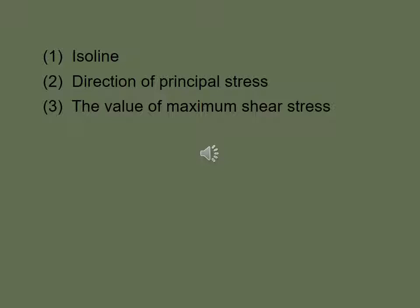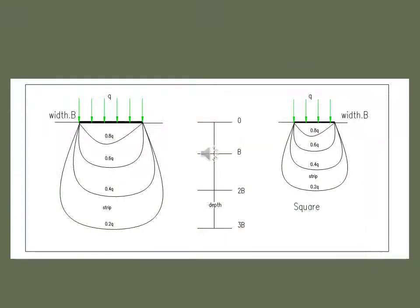And the stresses of isoline and direction of principle stresses. The value of maximum shear stresses are noted. If q is the distributed load with a width b, then the 0.8q, 0.6q, 0.4q and 0.2q are the distribution. They are all mentioned. So with the depth they decrease accordingly. The first one is 0 to b, b is the width of the boundary. Depth is b or equal to b or 3b. So as the depth increases this will decrease.